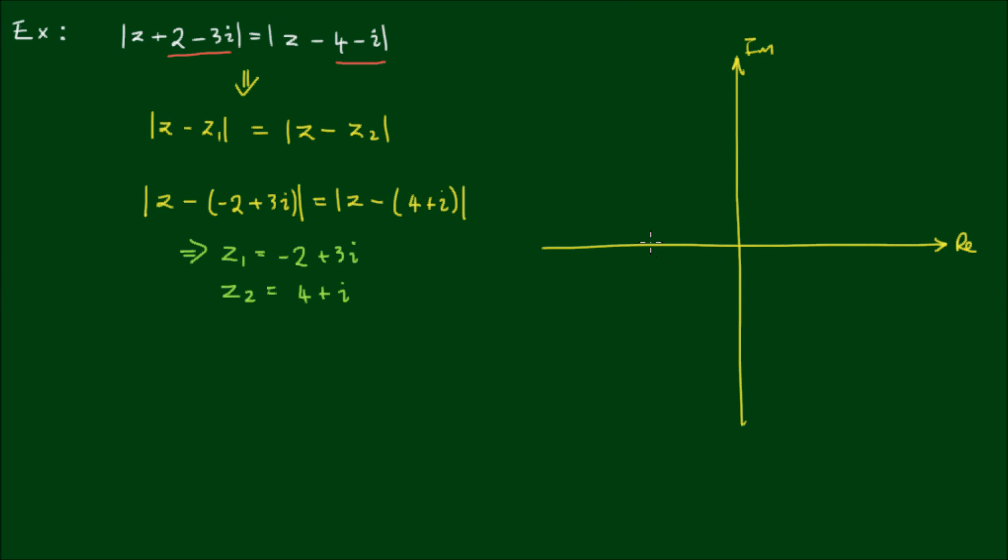So on the complex plane, z₁ has the coordinates of -2 + 3i. And z₂ has the coordinates of 4 + i.